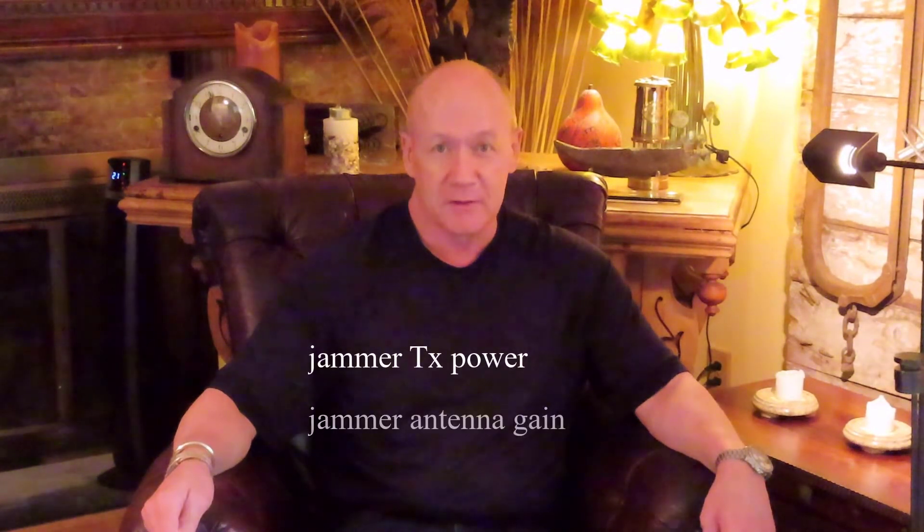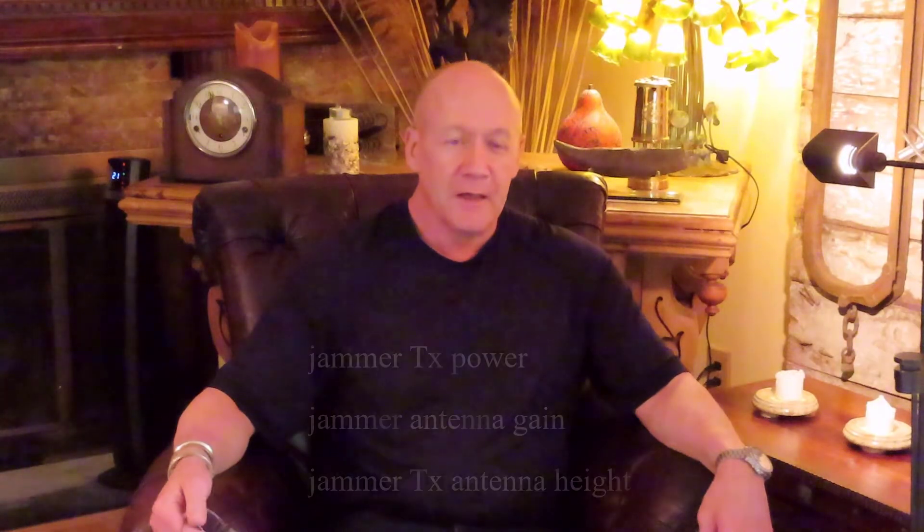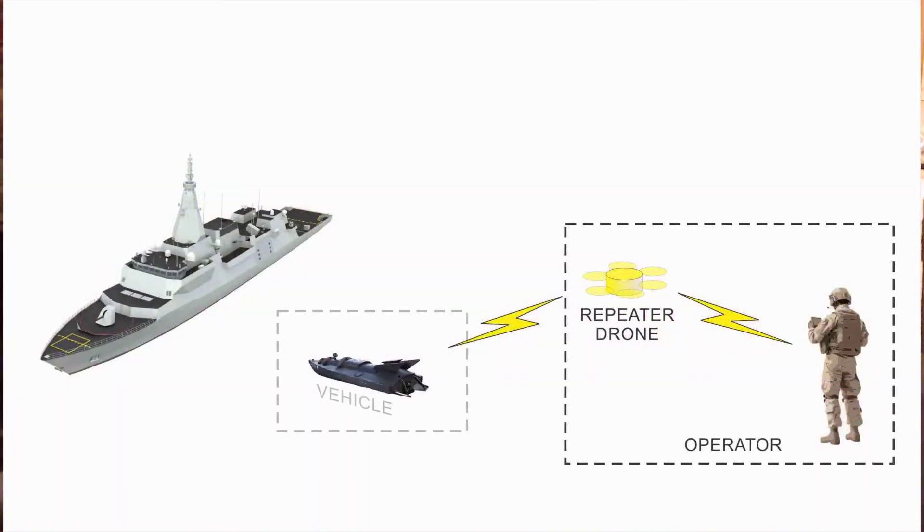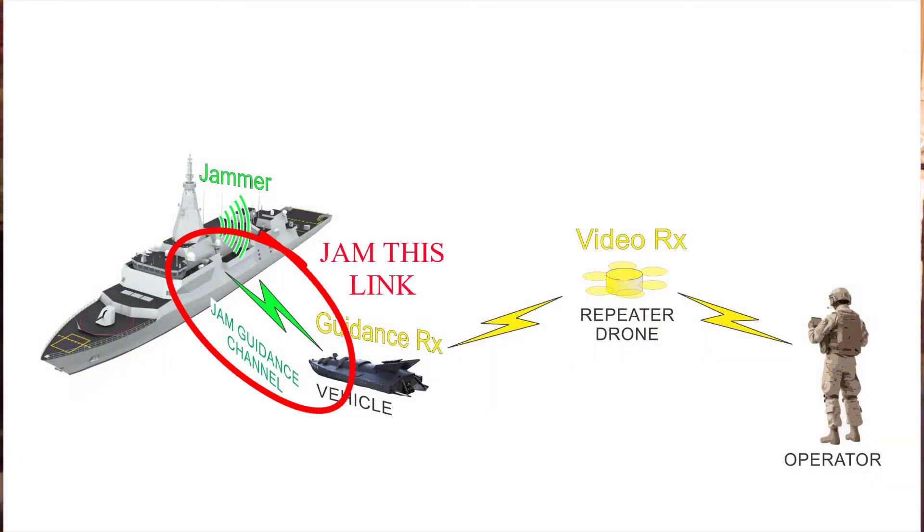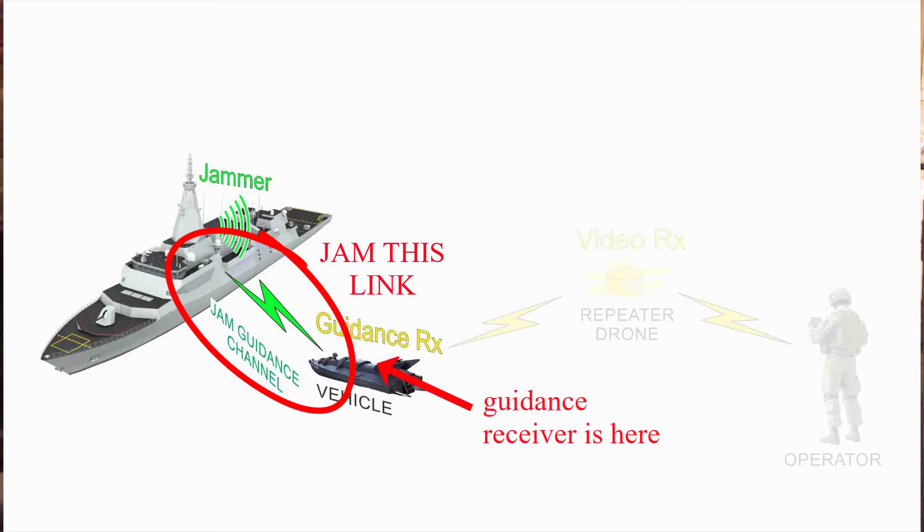So we only want to find these three parameters to illustrate the methodology. And as I said in the earlier video, to be perfectly clear, we're going after to jam the guidance link in the drone. And the reason is because we know where the receiver is for the guidance link. It's on the drone.